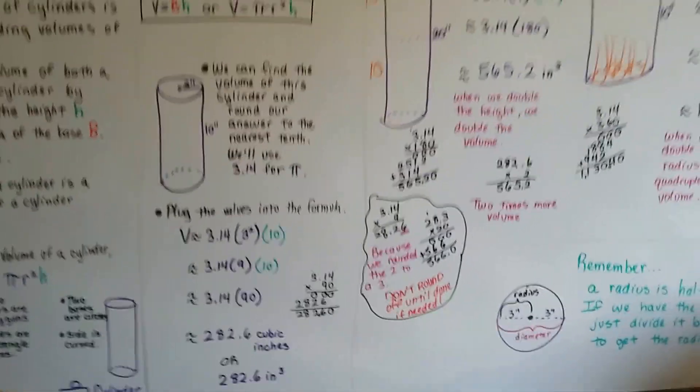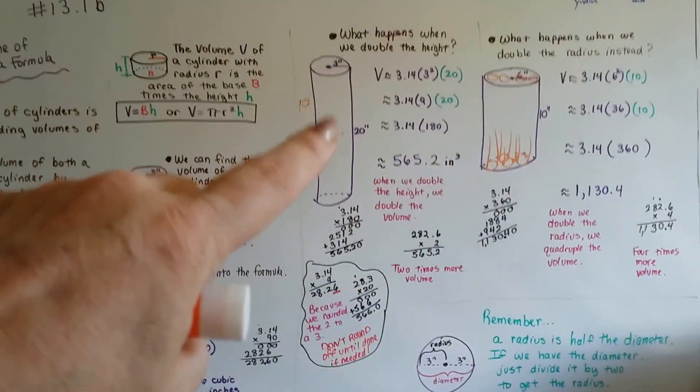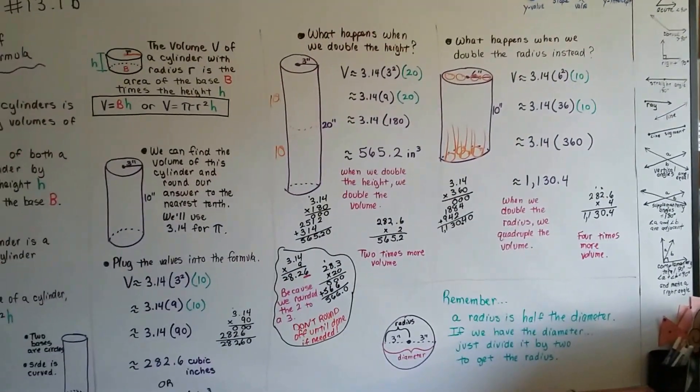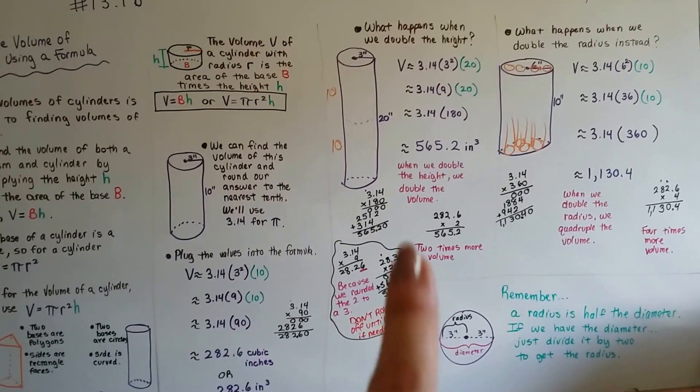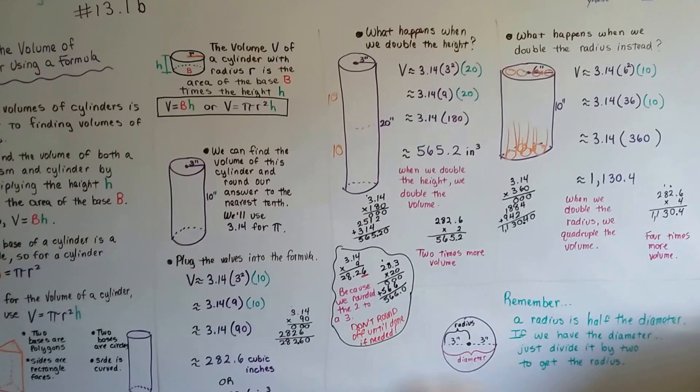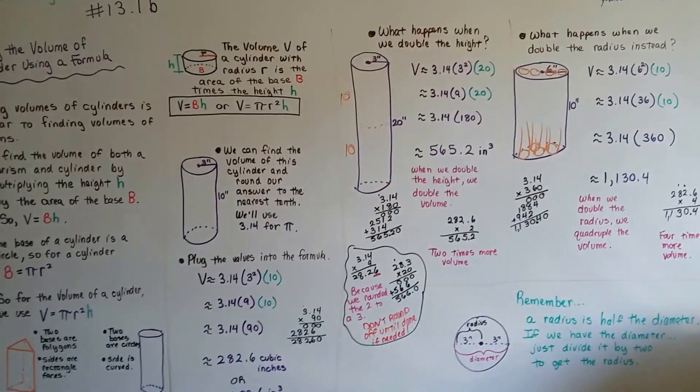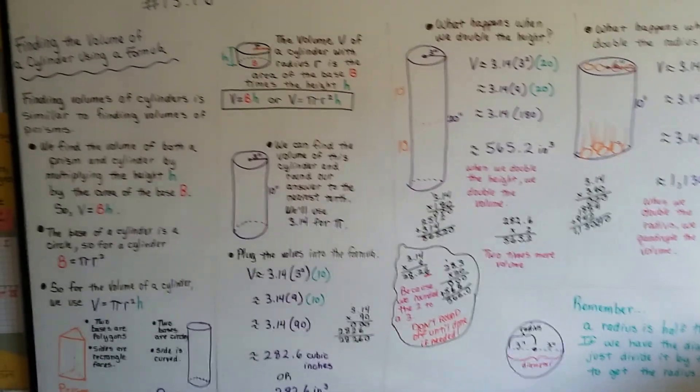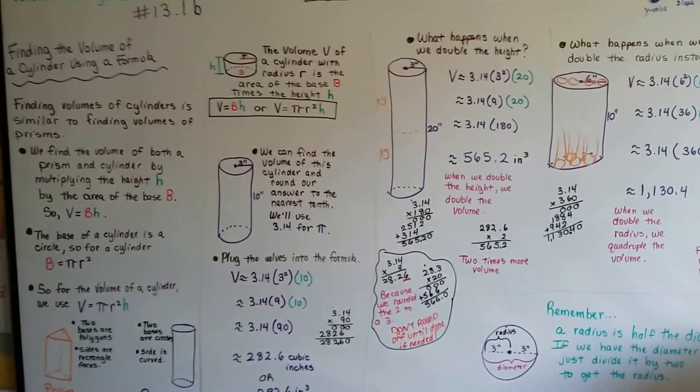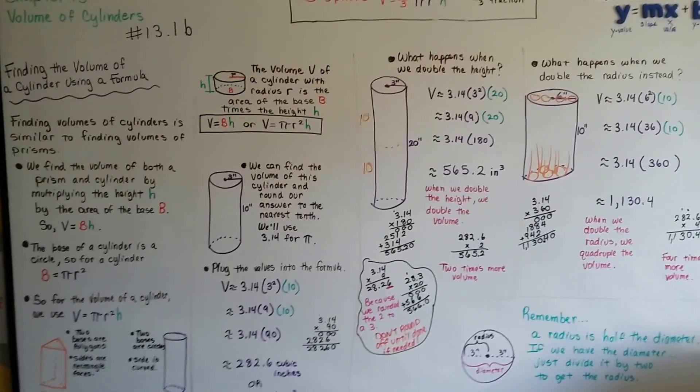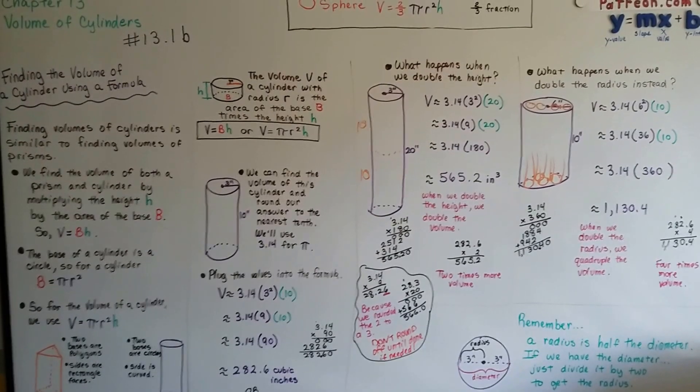Alright. So, that's finding the volume of a cylinder using a formula. Just remember that when you double the height, you double the volume, and when you double the radius, you quadruple the volume. It's 4 times more. And remember, do all your rounding at the end, and if you multiply your r squared to the height first, and then to pi, it might make it easier. And remember, you're doing pi, so it's an approximation. We're going to talk about doing the volume of a cylinder in a real-life situation in the next video. That's going to be 13.1c. I hope I'll see you there. Bye.